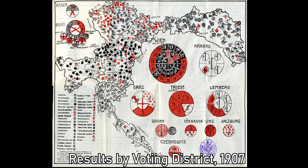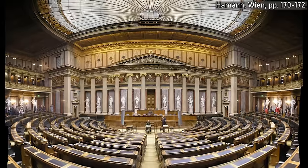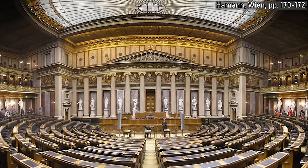In May of 1907, the first equal election happened with a staggering voter participation of 80%. This reform completely changed the political landscape. The Social Democrats increased their seats from 10 to 86, and the Christian Socials grew from 25 to 96 seats. No party gained an outright majority, however, and coalitions changed very often. The hope that the reform would somehow solve the national conflict was delusional, for lack of a better word.